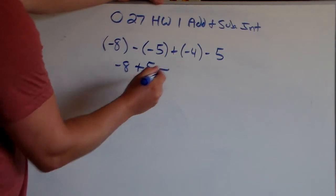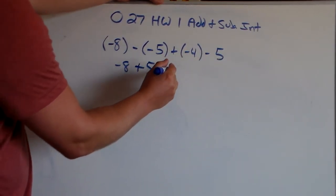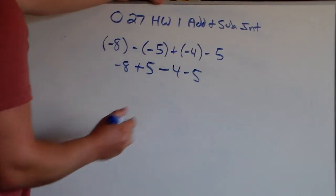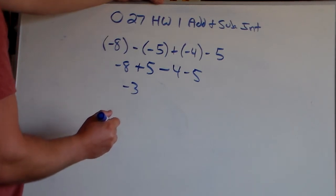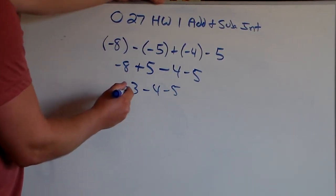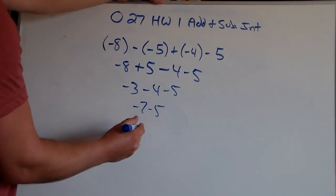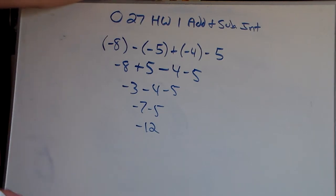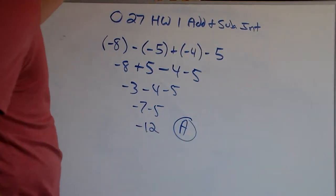And then we carry down, so it'll be negative 4. Then we carry down our negative 5. Negative 8 plus 5 gets us negative 3. Carry down the negative 4, carry down the negative 5. Negative 3 minus 4 gets us negative 7. Negative 7 minus 5 gets us negative 12. Which is A in our multiple choice for problem number 4.